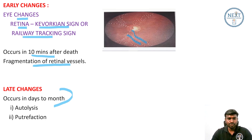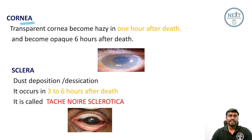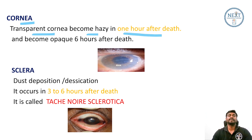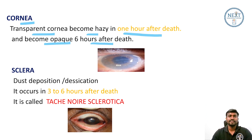The late changes occur due to autolysis or putrefaction, and these occur in days to months. Regarding the cornea: the transparent cornea becomes hazy within one hour after death and becomes opaque within six hours after death. Here we can see the hazy cornea.